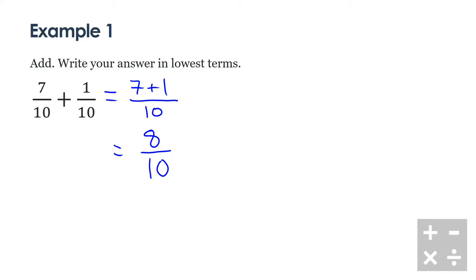This is correct, but what we forgot to do here is put our answer into lowest terms. The way that we do this is we look for that greatest common factor in both the denominator and the numerator and divide them both by that. I know that my greatest common factor between 8 and 10 is 2, so I'm going to divide both by 2.